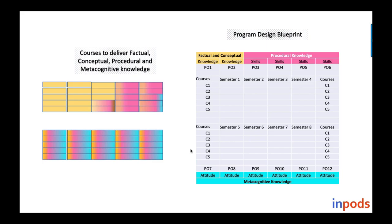I am going to present a blueprint for a four-year, eight-semester program. The same technique is applicable to three-year degree programs or two-year postgraduate programs — the philosophy is the same. In the blueprint, colors are used to identify program outcomes and their classifications: knowledge, skill, and attitude. We know that knowledge-category POs belong to factual and conceptual knowledge, skill to procedural knowledge, and attitude to metacognitive knowledge. I am assuming five courses per semester, though that can vary.